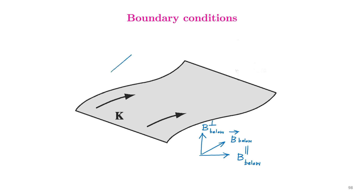Let us assume that the field existing at the top surface of the charge-carrying sheet is B above. This can again be resolved into two components: B parallel above and B perpendicular above. In the preceding sections, we will be trying to find out the relationship connecting the perpendicular component of the magnetic field below and above the charge-carrying sheet. We will also find out the connection between the parallel components below and above the surface. When we do that, we have all the boundary conditions that the magnetic fields obey when they traverse a discontinuity.